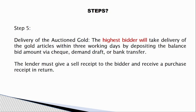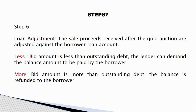Once the highest bidder is finalized and the entire auction process is completed, the proceeds are used to settle the outstanding loan. If the auction amount is less than the outstanding loan amount, the remaining balance must be collected from the borrower. If the bid amount is more than the outstanding loan, the excess must be returned to the borrower.